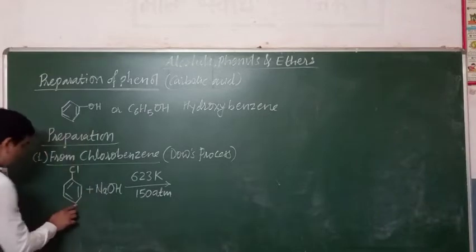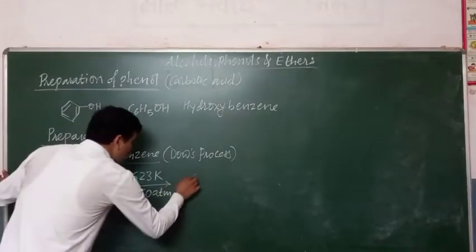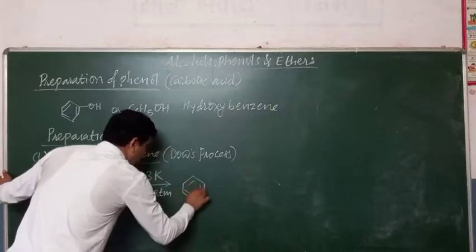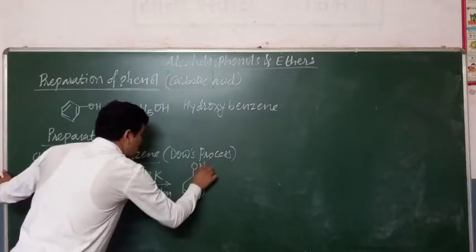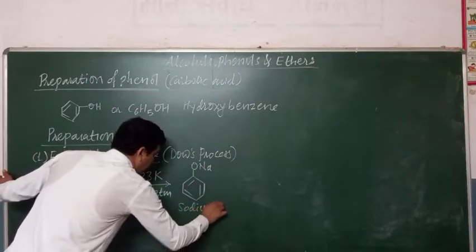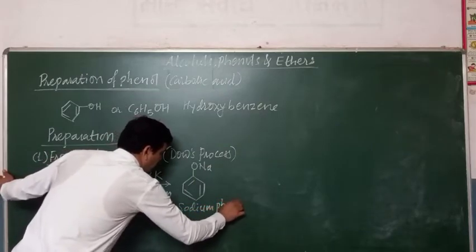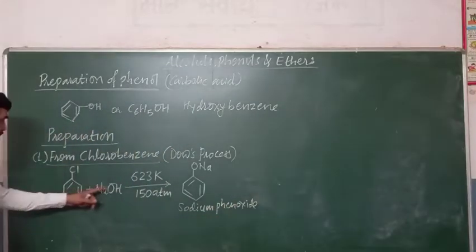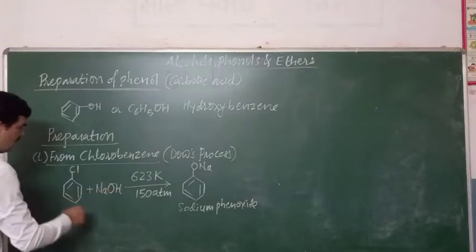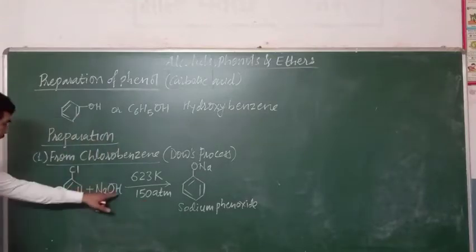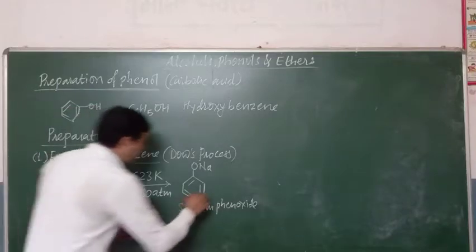Then, this chlorobenzene is converted into sodium phenoxide. Sodium phenoxide is obtained with the loss of HCl — HCl is removed from here.